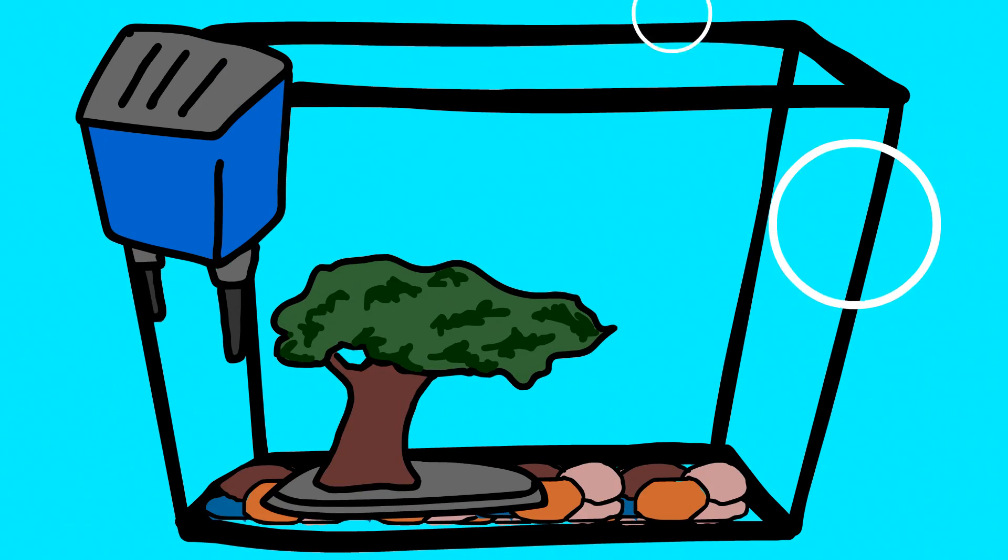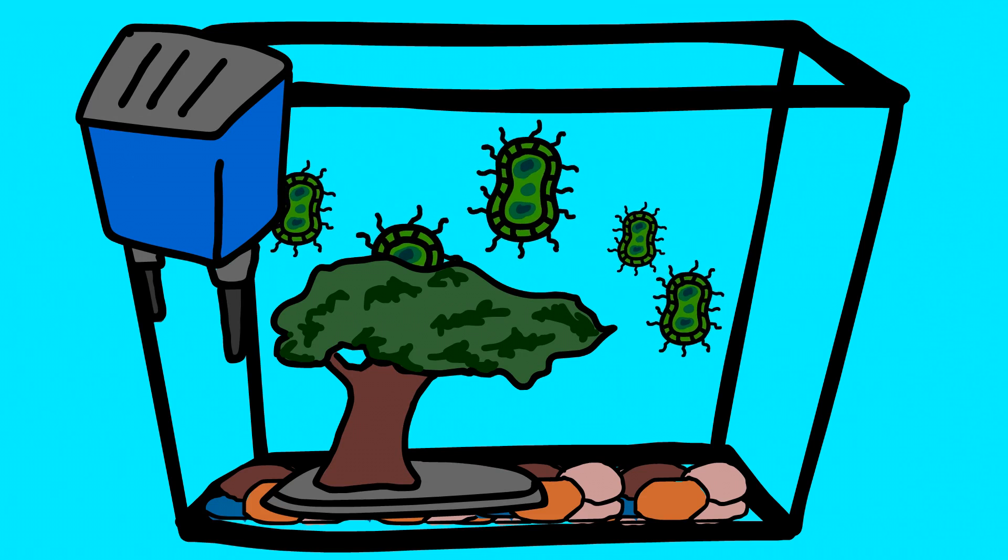It's best to wait until your tank is fully cycled before you add your fish. You can check the nitrogen levels with a variety of different tests on the market right now. There are some ways to speed up the cycling process, but it involves taking filter media, gravel, or decorations from an established tank. Of course, adding more bacteria will speed up the process, but not all of us have an established tank already.